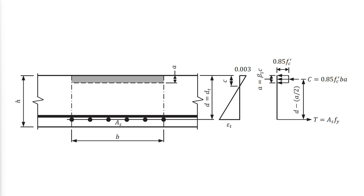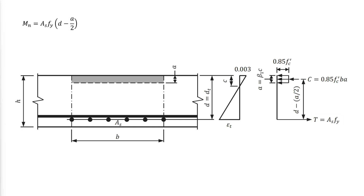The stress-strain distribution in two-way slabs in flexure is similar to one-way slabs, which was discussed in detail in another video — you can find the link at the top or in the description below. The maximum compression strain is 0.003, and the compressive and tensile forces are equal to each other. This makes the nominal flexural strength equal to As times Fy multiplied by the distance of the force resultants from each other, where d is approximated by the slab thickness h minus 1.25 inches.